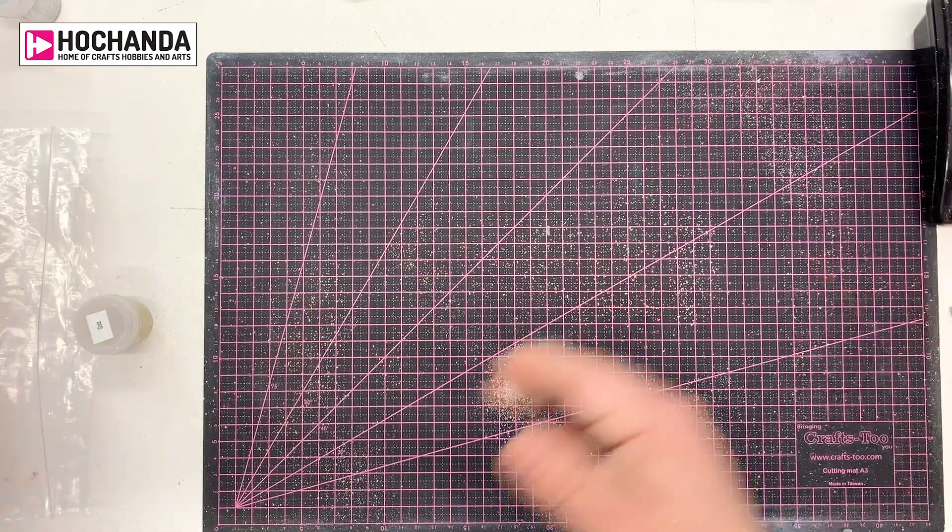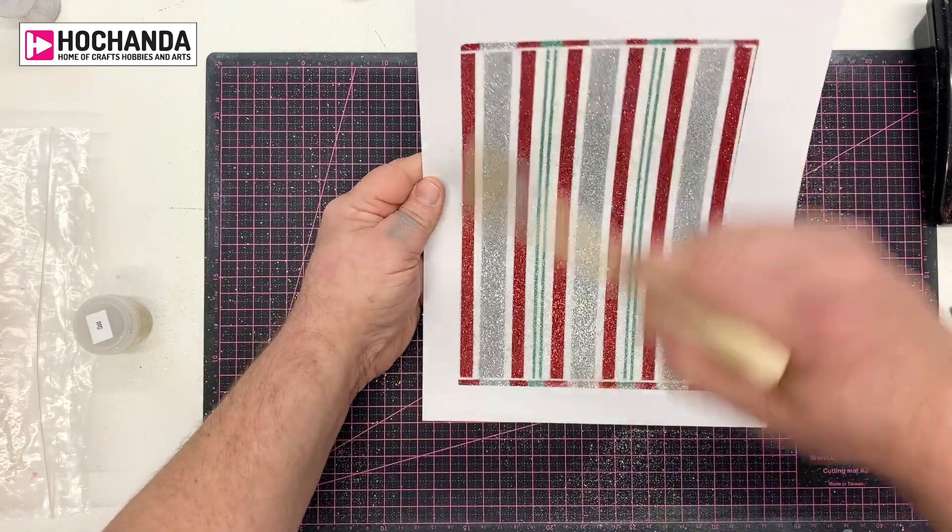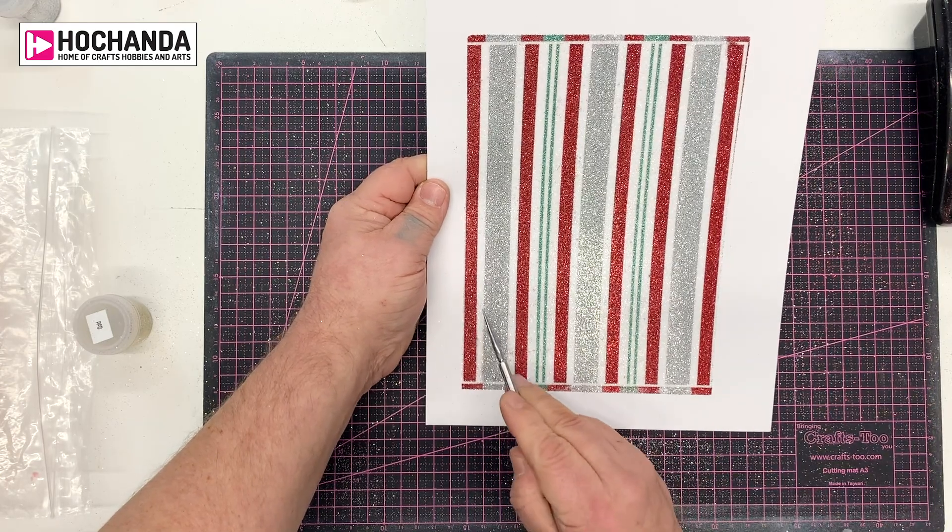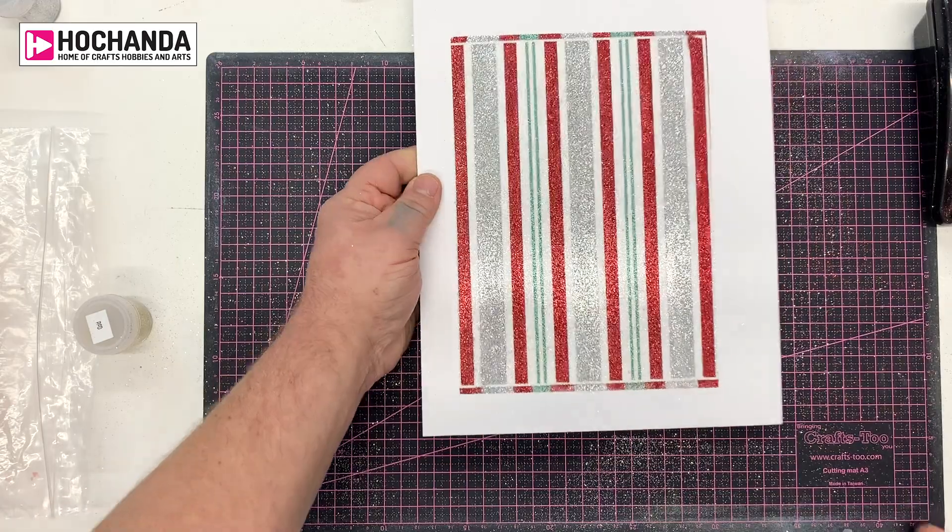And when we bring in then, we've got our finished panel. So you can see there, final dust down. We've got the beautiful stripes. So we go from the red to the white, to the silver, to the white, to the red, to the white, to the green, to the white, and so on.